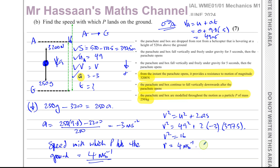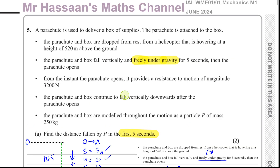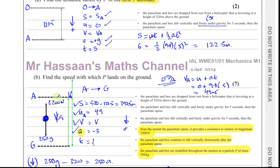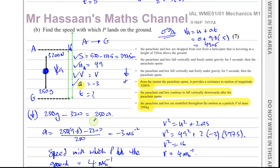It's very important to keep your thinking straight: the acceleration between O and A is different from that between A and G. You can't use the same SUVAT values throughout. The speed at A becomes the initial speed for the new phase of motion with parachute resistance.